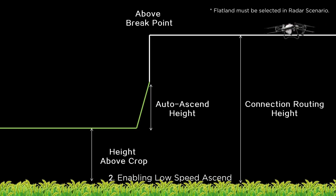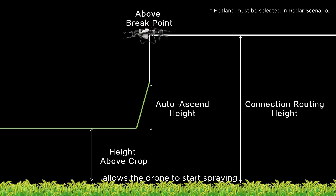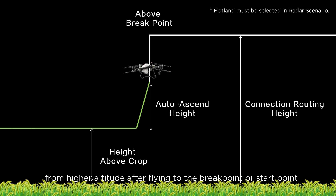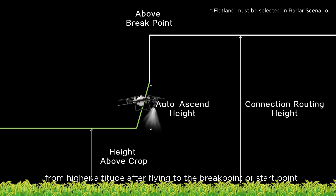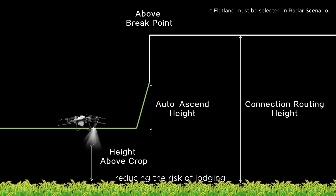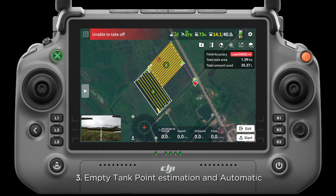2. Enabling low-speed ascend allows the drone to start spraying from a higher altitude after flying to the breakpoint or start point, reducing the risk of lodging.